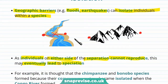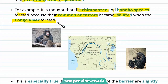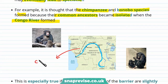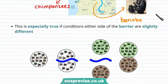It's thought that the chimpanzee and bonobo species formed because their common ancestors became isolated when the Congo River formed. The population that gave rise to the chimpanzees were found at the north of the river, and the population that gave rise to the bonobos were found at the south. Once this ancestral population became separated, they couldn't interbreed, and this led to the formation of chimpanzees and bonobos.